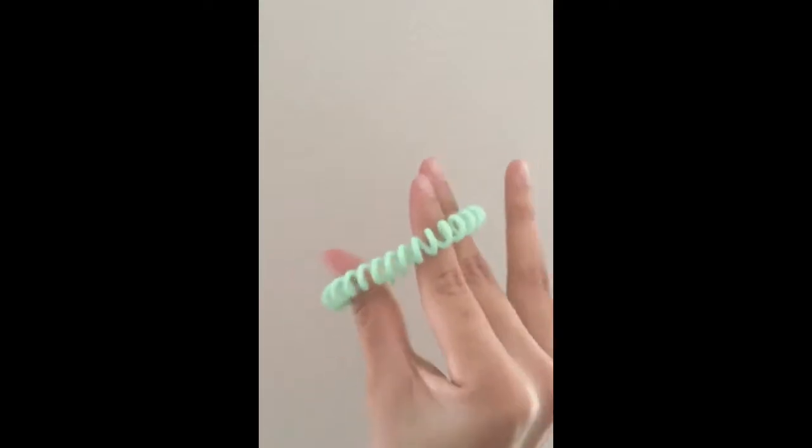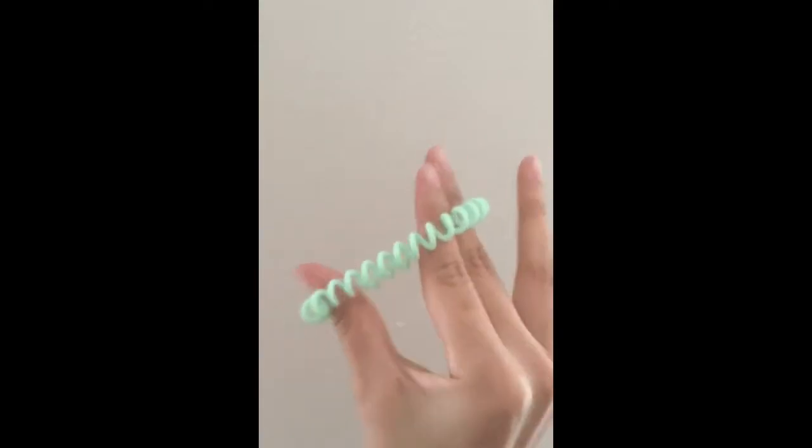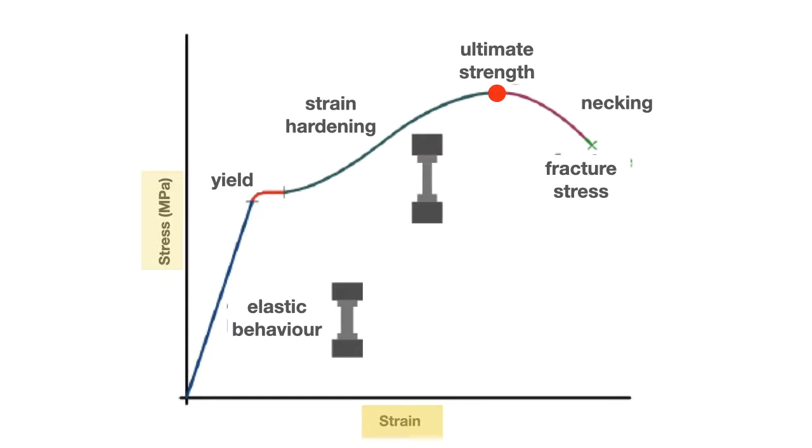So that is the strain hardening region, or sometimes you call it the plasticity region. And then at a certain point of displacement, the material will have its ultimate strength, maximum strength. It is the maximum stress value that the material can sustain. Over that limit, the material cannot hold it anymore and it will begin to fracture. Some ductile materials will exhibit necking before fracture, while some brittle materials will just immediately fracture, for example like ceramic or tiles.